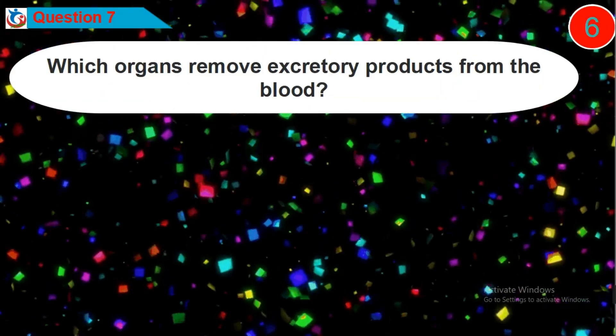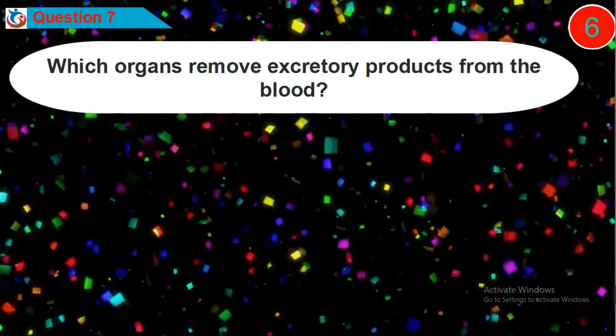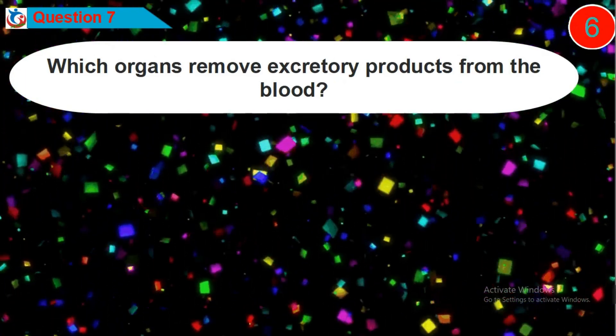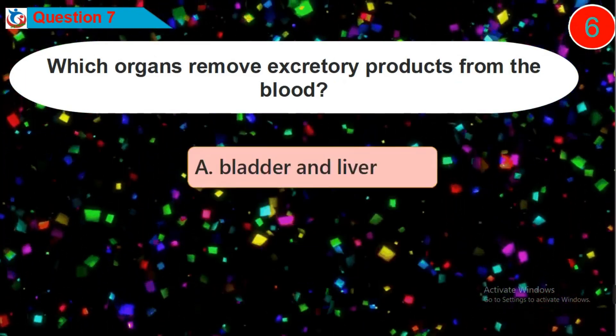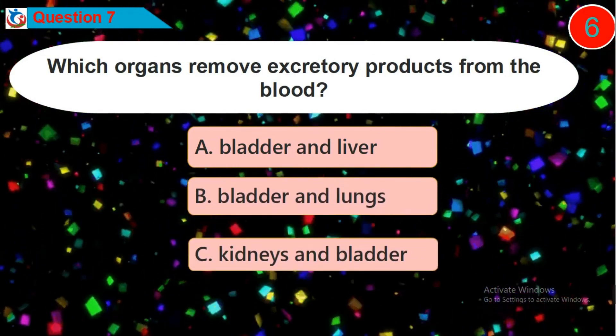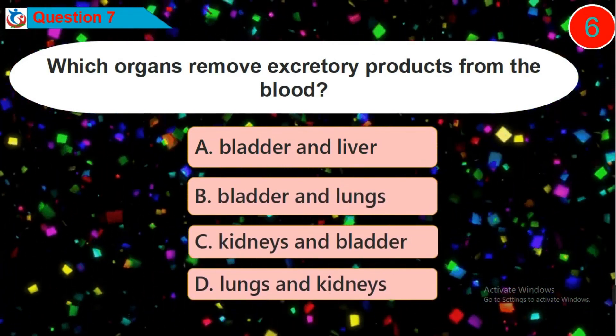Question 7: Which organs remove excretory products from the blood? Is it option A, B, C, or D?